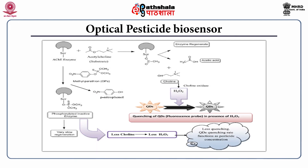Another example of a pesticide biosensor is based on optical properties. The same principle is used, but the final output is obtained through an optical transducer. In this case, the production of hydrogen peroxide has been integrated with a quantum dot. Hydrogen peroxide has the ability to quench the fluorescence of the quantum dot. So the presence of pesticide is directly proportional to the fluorescence of the quantum dot, since higher pesticide produces less hydrogen peroxide, which reduces quantum dot quenching.